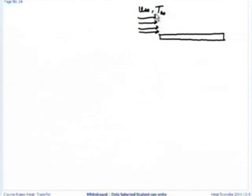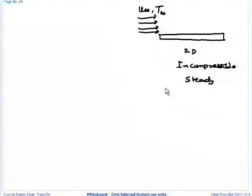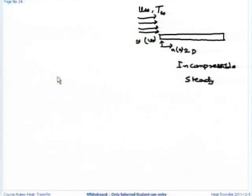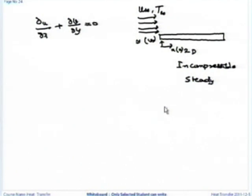I am taking two-dimensional incompressible steady flow. That means velocity is varying only with x and y — in x it is going to be u and in y it is going to be v. The continuity equation for incompressible 2D flow is: del u by del x plus del v by del y equal to 0.